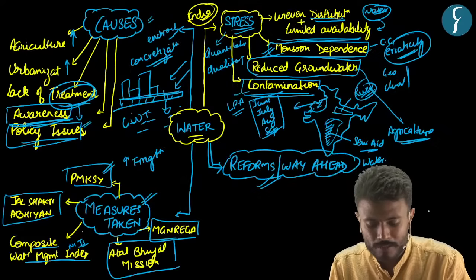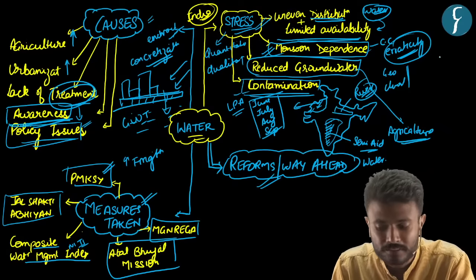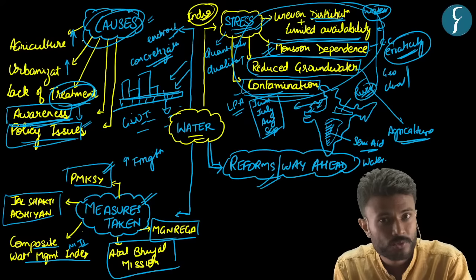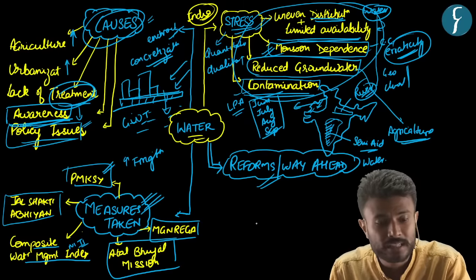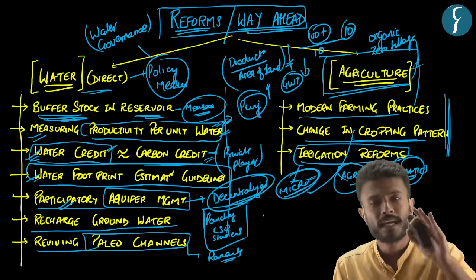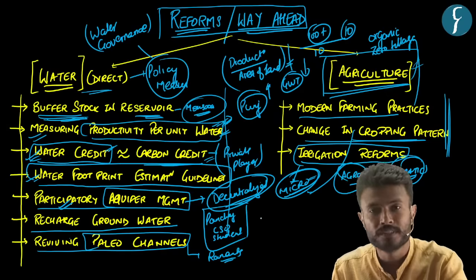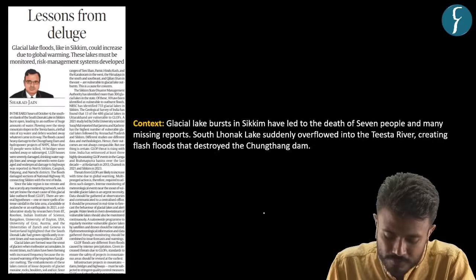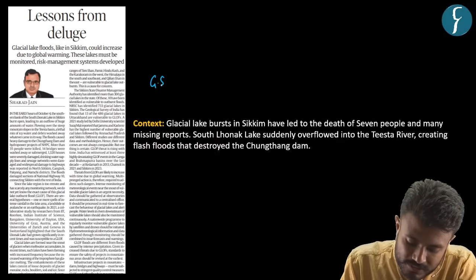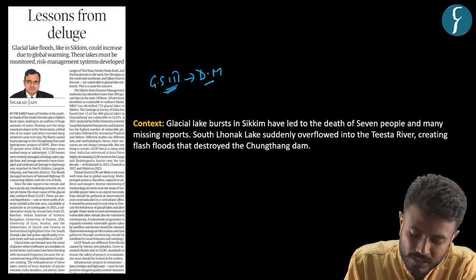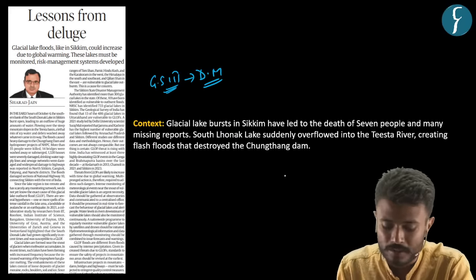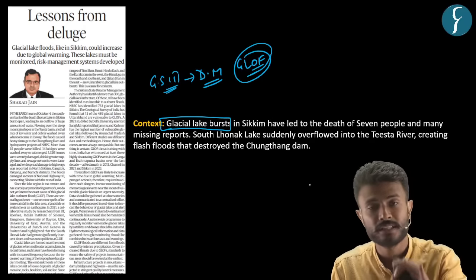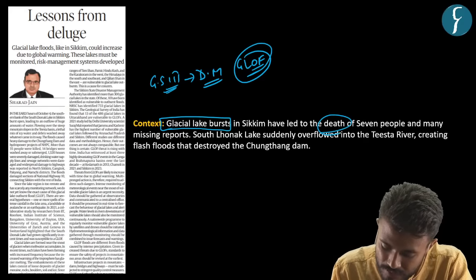To summarize the water stress topic: we discussed what water stress means, the conditions responsible for it in India, the immediate causes, government measures already taken, and the way ahead with potential solutions. Now let us move to the last topic — Glacial Lake Outburst Floods (GLOF) — from the GS mains Paper 3 disaster management perspective. The immediate context is the GLOF that recently hit Sikkim, causing several deaths.